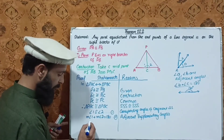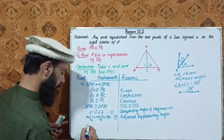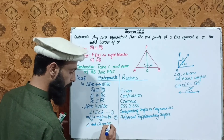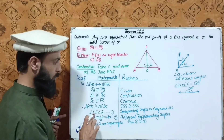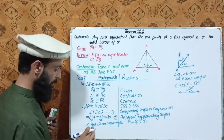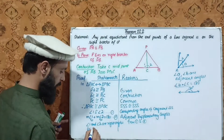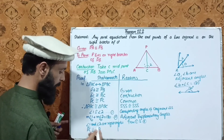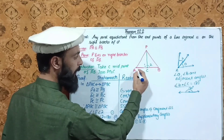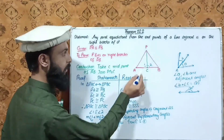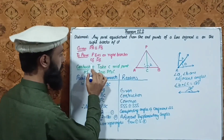Since angle 1 equals angle 2 and angle 1 plus angle 2 equals 180 degrees, each angle equals 90 degrees — so angle 1 and angle 2 are right angles. This means PC is perpendicular to AB. Therefore, P lies on the right bisector of AB. This completes the proof.